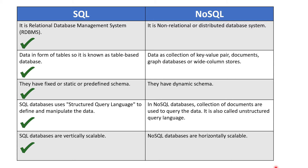For better understanding: suppose you have two databases, one SQL and one NoSQL, both storing 100 GB of data, and now you need to store more than 100 GB. In the case of SQL, you would upgrade the RAM or SSD of the existing server. In the case of NoSQL, instead of upgrading the CPU, you can add a new server to handle the extra data. So SQL is vertically scalable and NoSQL is horizontally scalable.